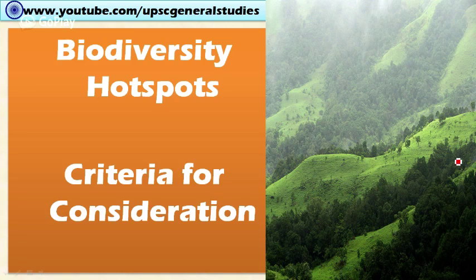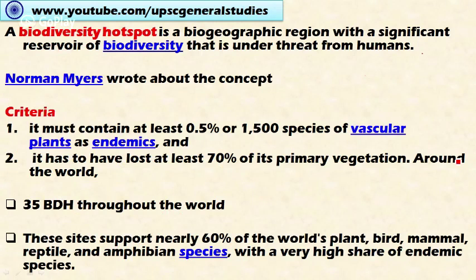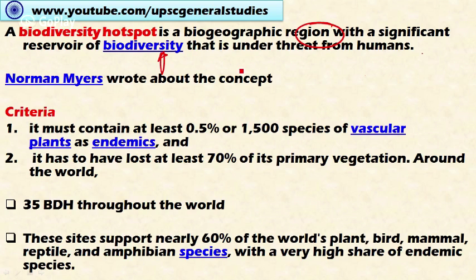In this video, let's discuss biodiversity hotspots. A biodiversity hotspot is a biogeographical region with a significant reservoir of biodiversity that is under threat from human beings. That region has a significant reservoir of biodiversity, and at the same time is under threat from human beings through various interferences like industrialization, deforestation, and encroachment of forest areas.